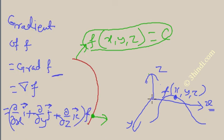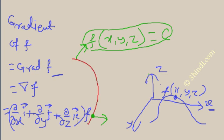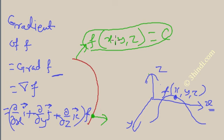So you get the value of partial differentiation along x, y, and z. If you put all these into vector form, it becomes the gradient of f. The gradient of f is a vector quantity representing the slopes at that point — the i component is del f by del x, the j component is del f by del y, and the k component is del f by del z. This gradient vector is always normal to the surface f(x, y, z) = constant.